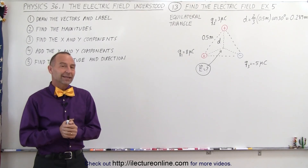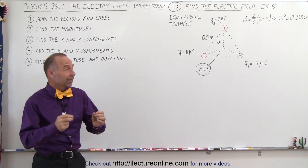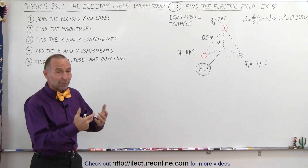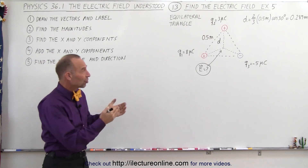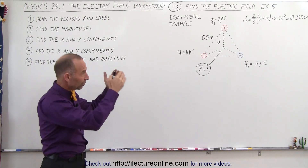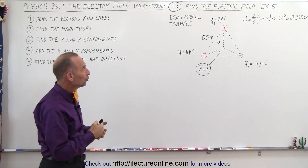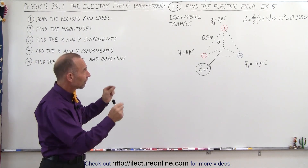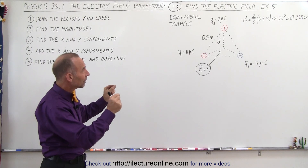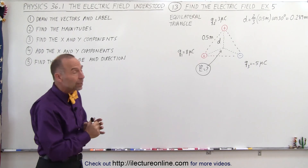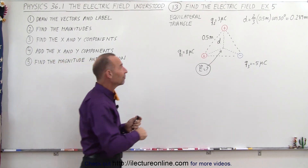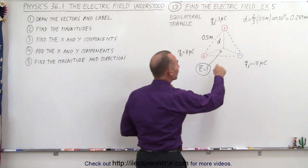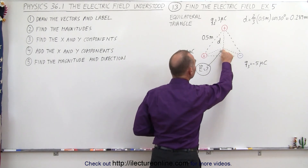Welcome to Electron Line, and now for something a little bit more complicated. We have three charges — they're not all on the line. Q1, Q2, and Q3 are at the corners of an equilateral triangle, and we're trying to find the electric field at the midpoint of the triangle.